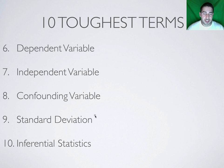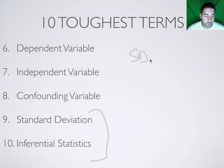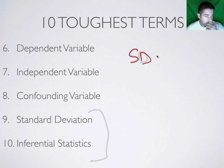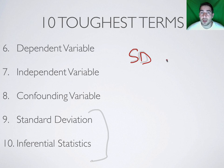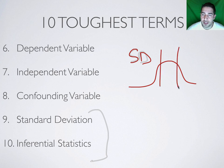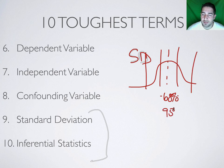Finally, the last two involve statistics: standard deviation and inferential statistics. Standard deviation is the distance from the mean — the difference from the mean. Standard deviation tells us how much variation there is in the data. The bigger the standard deviation, the more variation; the lower the standard deviation, the less variation. Generally, we want a low standard deviation in our results — the lower it is, the more we can say that all the people are alike. Within one standard deviation is 68% of the population, and within two standard deviations is 95% of the population.